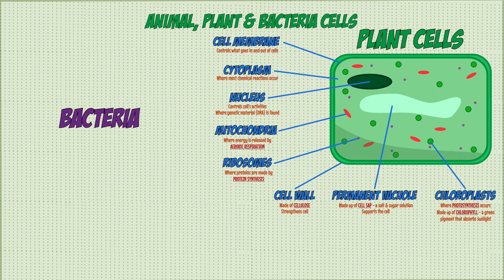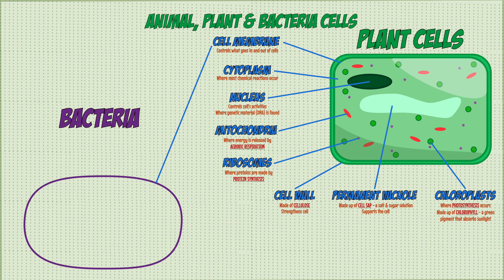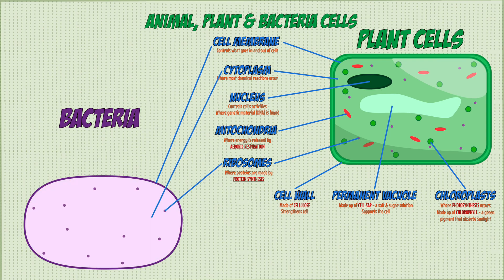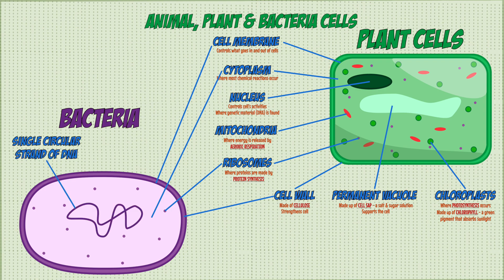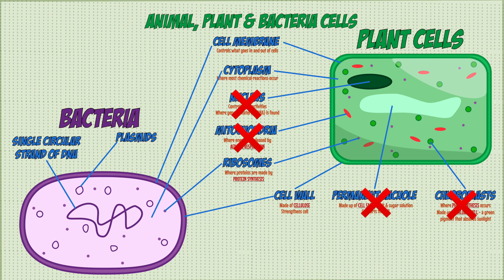Bacteria cells also have some of these structures: cell membranes, cytoplasm, ribosomes and cell walls — but they do not have a nucleus. Instead, most of their genetic material is found in a single circular loop of DNA that floats around in the cytoplasm. The rest is found in small rings of DNA known as plasmids, which also float in the cytoplasm. Bacteria do not have nuclei, chloroplasts, permanent vacuoles or mitochondria.